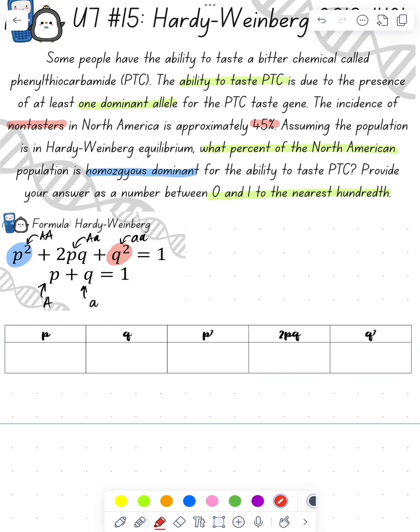We're going to use our chart to fill it in. We know that q² is going to be 0.45 because it's given in the prompt. We take the square root of that to get our q value. So our q value is the square root of 0.45, which is 0.67.